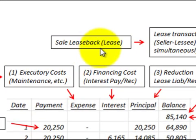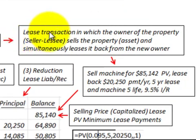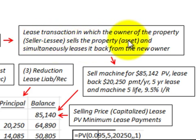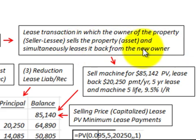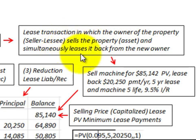Here we're going to be looking at a sale-leaseback for a lease. That's where we have a lease transaction in which the owner of the property — the seller or the lessee — sells the property or an asset and simultaneously leases it back from the new owner. The new owner purchases it from the seller or lessee and then leases it back to the seller or lessee.